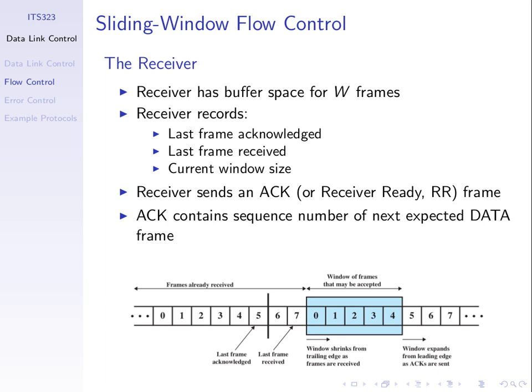This is under the assumption that the receiver has enough memory — enough buffer space — to store W frames, where W is the maximum window size. If our maximum window is seven, then we assume the receiver has enough memory to store seven frames at a time. In stop-and-wait, the receiver needs enough memory to store just one frame at a time. So in sliding window we need more memory at the receiver, which is a limitation — a drawback of the protocol.